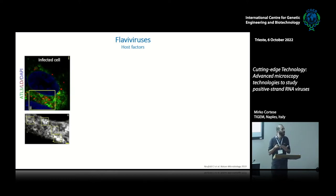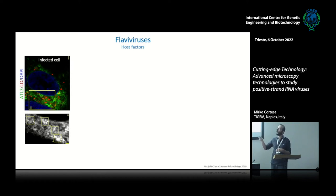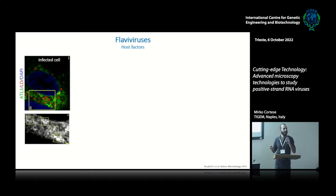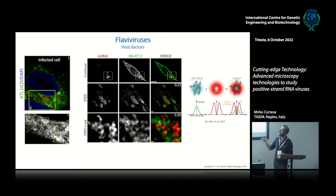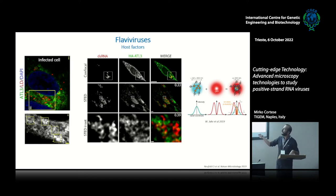How can we prove that atlastin is involved in forming the replication organelle? The first thing is to perform imaging — take an infected cell and analyze where atlastin, our target ER protein, localizes. We did this, and in infected cells stained for atlastin-3 you can see clusters where atlastin-3 is present. But we don't have enough resolution to determine if these clusters are replication organelles. To gain more resolution, we performed STED super-resolution microscopy, reaching 20 nanometer resolution — the best you can get — but we still lack the structural context to confirm atlastin-3 is required for replication organelle formation.